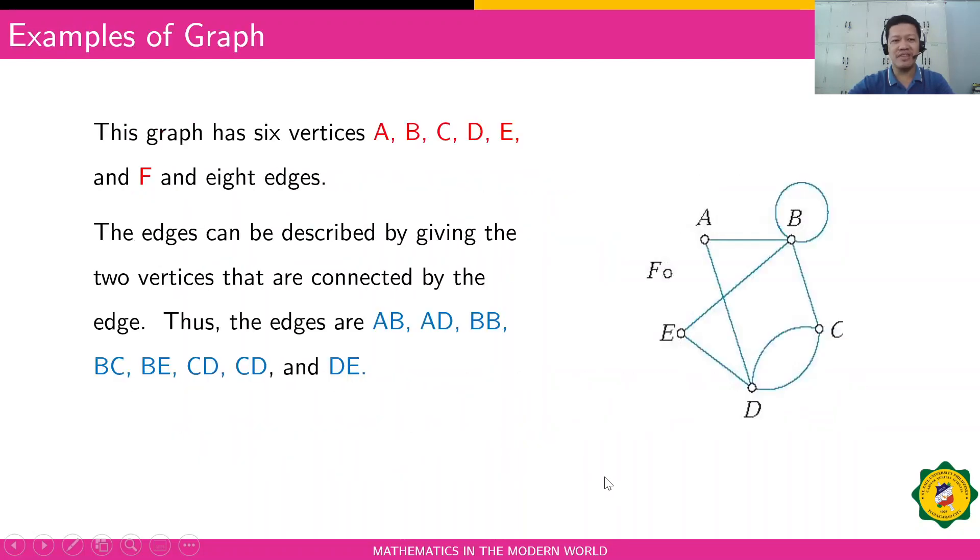Let's have an example. This is an example of a graph. We have six vertices, namely vertex A, vertex B, C, D, E, and F. And we have eight edges. To name the edges, we have AB, AD, BD, BC, BE, CD, another CD (that's a different line), and DE.